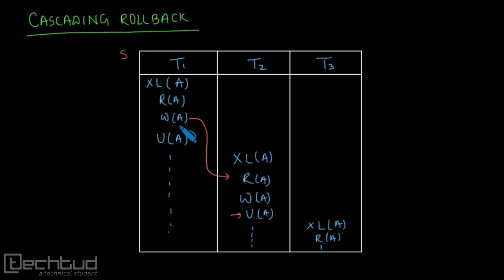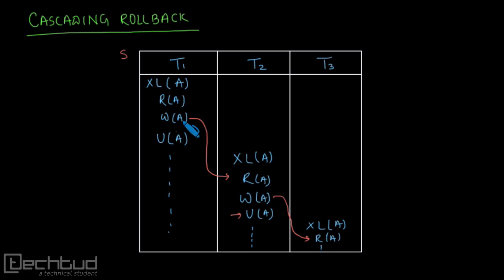After T2 unlocks, T3 can lock data item A, read it, and perform whatever operations it wants. So whatever T1 writes on A is read by T2, and whatever T2 writes is read by T3. These transactions are not yet committed, so T2 is reading dirty data — this is a dirty read — and similarly T3 is also doing a dirty read.